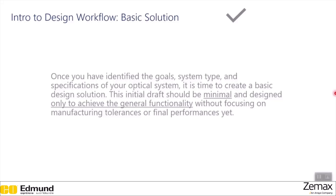There are three different solution types for your basic solution. The first one is a finite-finite conjugate, meaning light comes from a definitive source and as it exits the system, it focuses to a single spot. For the infinite-infinite conjugate, light comes in from infinity as a collimated beam, the diameter is adjusted through the system, and the exiting beam has a new diameter but is still collimated.